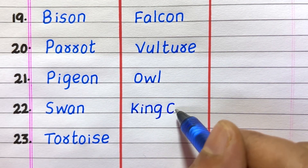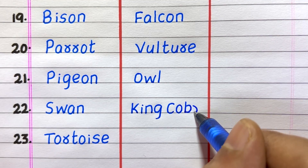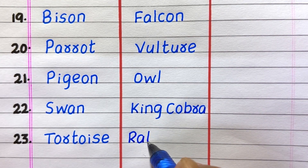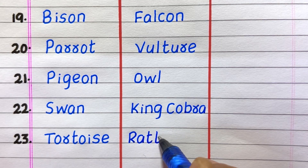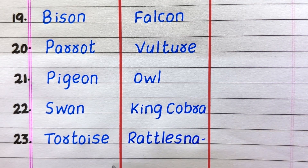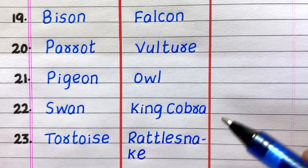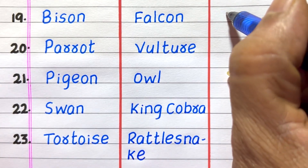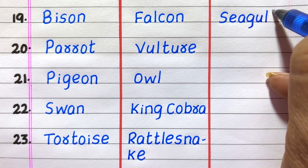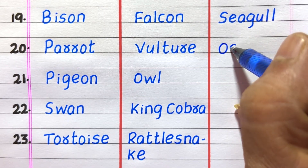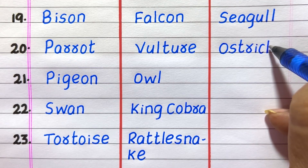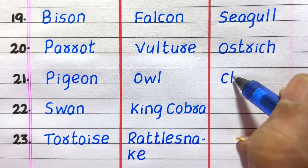Nineteenth example of a carnivore animal is falcon, twentieth vulture, twenty-first owl, twenty-second king cobra, twenty-third rattlesnake.